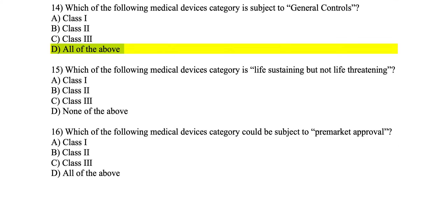Number 15: which medical device category is life sustaining but not life threatening? Class one is non-life-sustaining and non-life-threatening with the least control. Class two is not life sustaining but is life threatening if it fails. Class three is life sustaining and also life threatening if it fails. So which is life sustaining but not life threatening? That would be class three, because if it is life sustaining and it fails, it becomes life threatening — the opposite scenario.